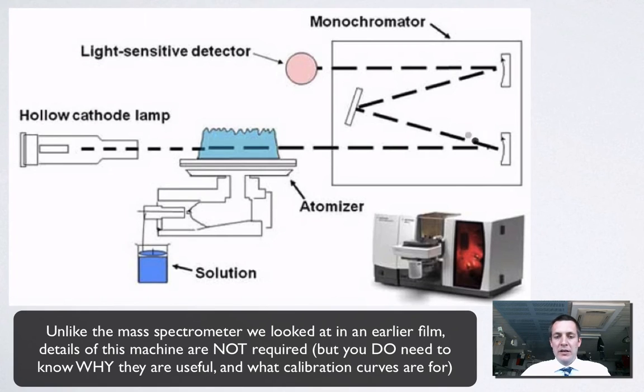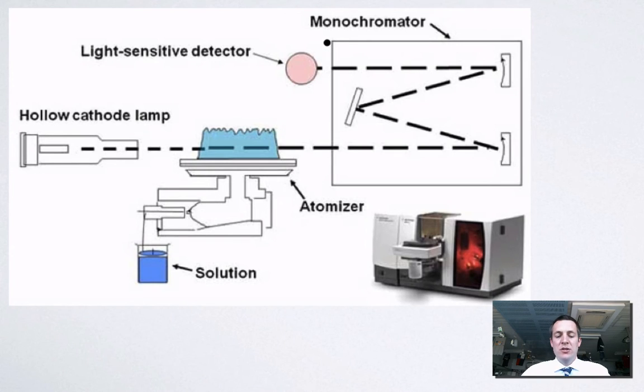The light then gets shone through what's called a monochromator, and this basically uses mirrors or prisms to split the light into particular frequencies so we can observe each individual frequency at a time in our machine. Using this light-sensitive detector, we can see how intense the light that's coming through is.